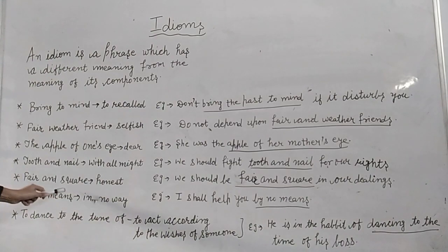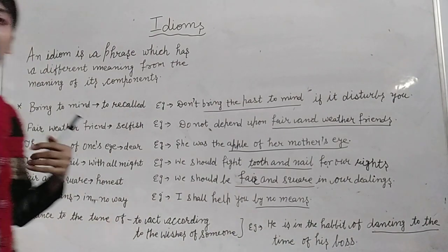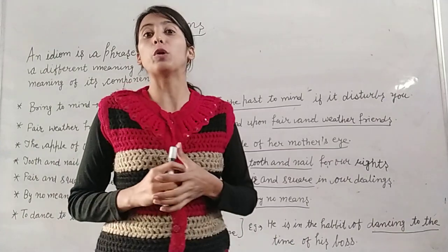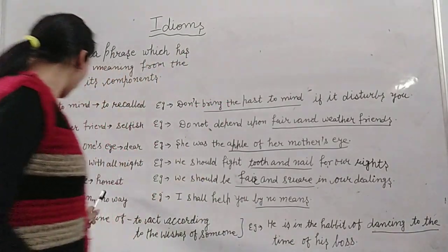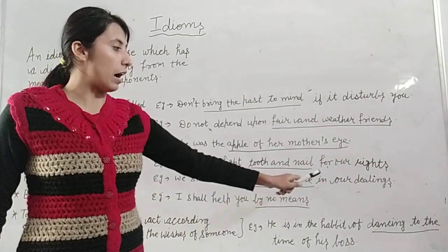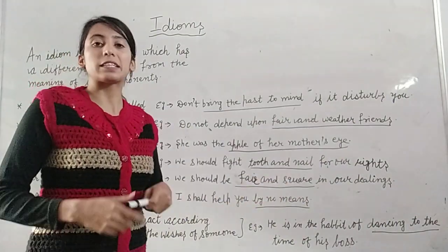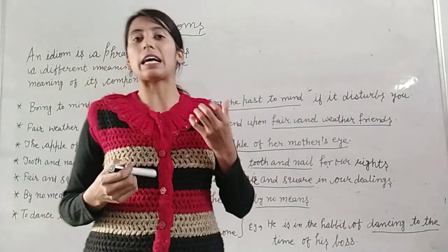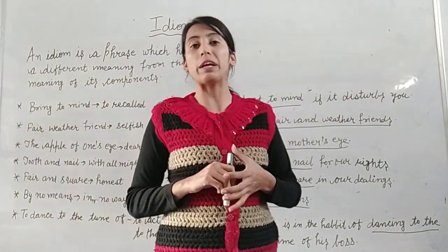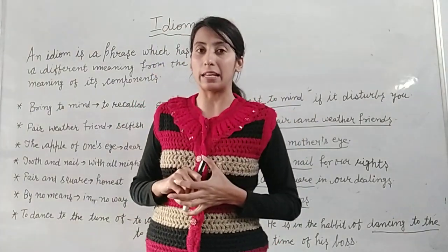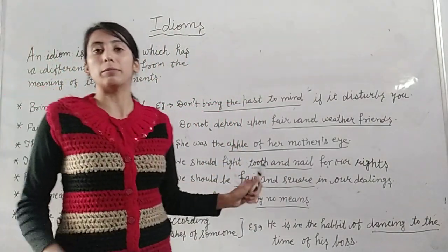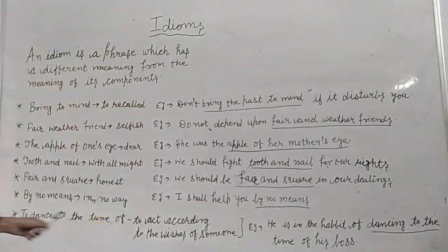'Fair and square' means honest — इमानदार, जो बिल्कुल इमानदार होता है. Example: We should be fair and square in our dealings. कि हमें अपनी dealings में जो भी हम दूसरों के साथ dealing करते हैं उसमें इमानदार रहना चाहिए — fair and square रहना चाहिए, means honest रहना चाहिए.